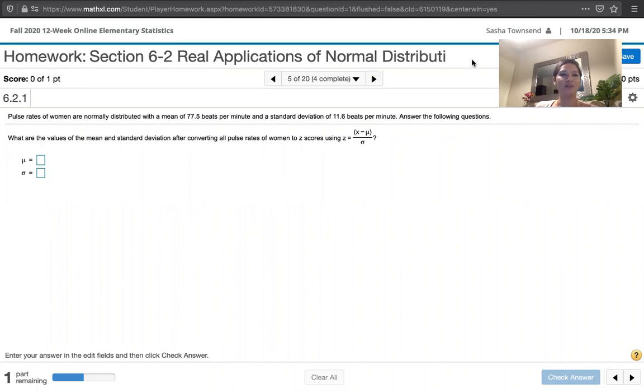First, it says, what are the values of the mean and standard deviation after converting all pulse rates of women to z-scores using z equals x minus the mean divided by the standard deviation?